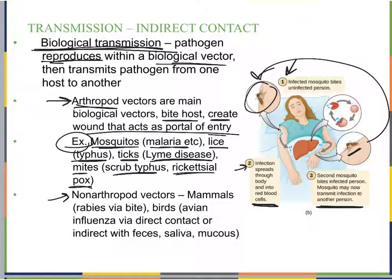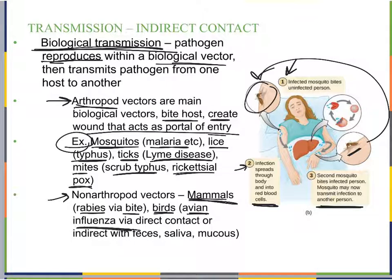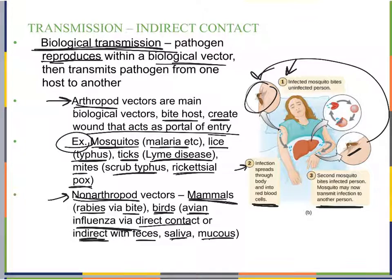We also have non-arthropod vectors. For example, mammals like dogs with rabies — when a dog infected with rabies bites a person, it transmits rabies via the bite. Birds can be non-arthropod vectors as well, as with avian influenza, which can be transmitted through direct contact or indirect contact with bird feces, saliva, or mucus.